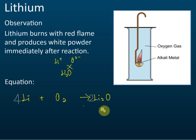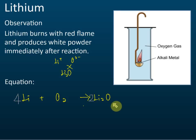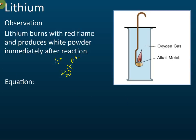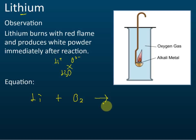In previous lessons you learned how to write equations where the reactants and products were given. From now on, in exams they won't tell you the reactants or products — they'll just say 'write the chemical equation for the reaction between lithium and oxygen.' So you have to memorize the products yourself.